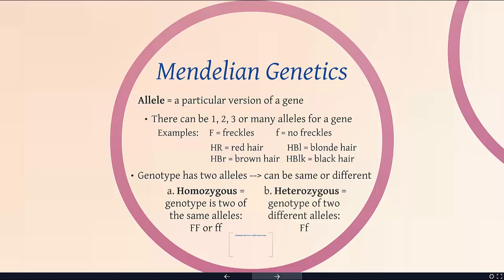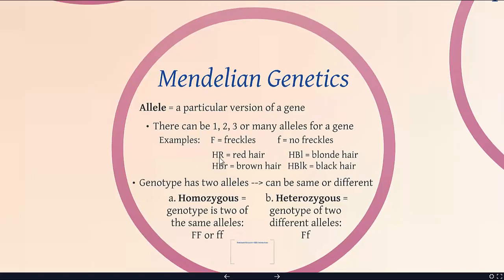Heterozygous is when your genotype consists of two different alleles. In the freckles example, there are only two options, and so there's only one kind of heterozygote: a big F and a little f. With hair color, we have four different alleles, and so there are many possible combinations of heterozygotes.